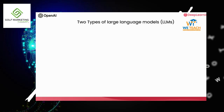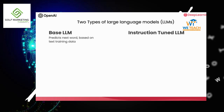We hope that this will spark your imagination about new applications that you can build. In the development of large language models, there have been broadly two types of LLMs, which I'm going to refer to as base LLMs and instruction-tuned LLMs. A base LLM has been trained to predict the next word based on text training data, often trained on a large amount of data from the internet and other sources, to figure out what's the next most likely word to follow.